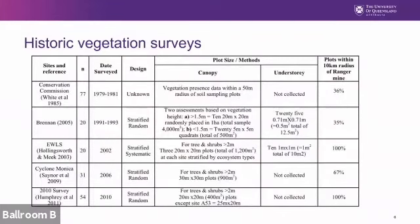When we compile that data, it falls into five main pieces of work. First, the Conservation Commission work done in the late 70s, early 80s, published a few years later. The design used a 50-metre radius; they didn't collect understory, mainly overstory — it was about looking at land units. Kim Brennan published in 2005 a report, but that data was actually collected in the early 90s; that was stratified random, had both understory and overstory, quite a complex mix of randomisation within single hectare plots. On the far right, within a 10-kilometre radius — the area we consider similar — only about 35% of these plots were within that range.